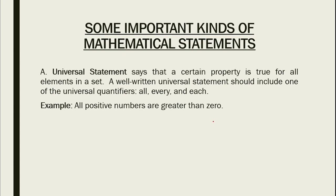Next, we have some important kinds of mathematical statements. The first is the universal statement, which says that a certain property is true for all elements in a set. A well-written universal statement should include one of the universal quantifiers: all, every, and each. Example: 'All positive numbers are greater than zero.' By the universal quantifier 'all,' we can say this is a universal statement.